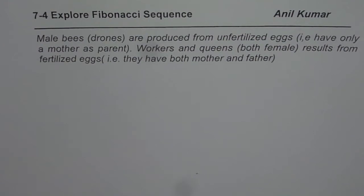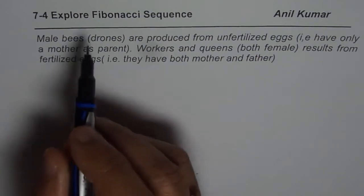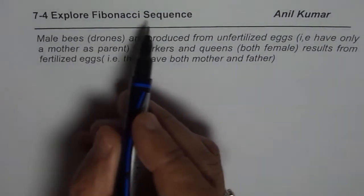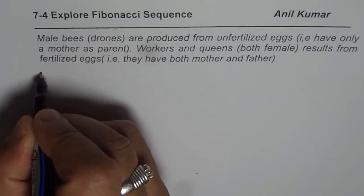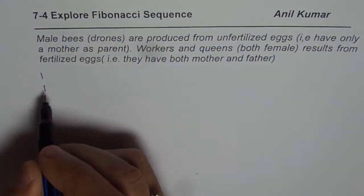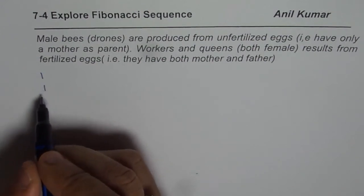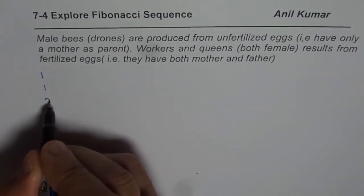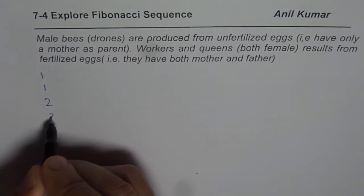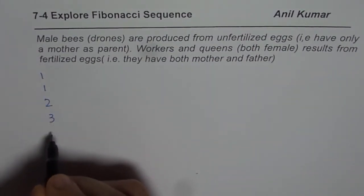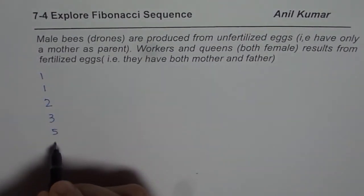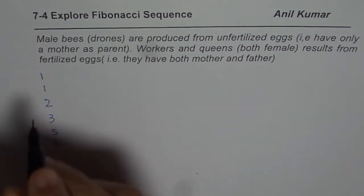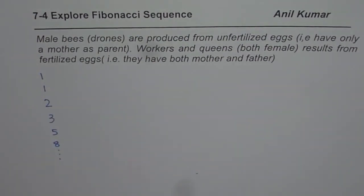What is the Fibonacci sequence? Let me write it down on the side so that we can match the numbers. In the Fibonacci sequence, we start with numbers 1 and 1, and then we add the previous two numbers to get the next number. 1 plus 1 is 2, 2 plus 1 is 3, 3 plus 2 is 5, 5 plus 3 is 8. Like that, this series continues.